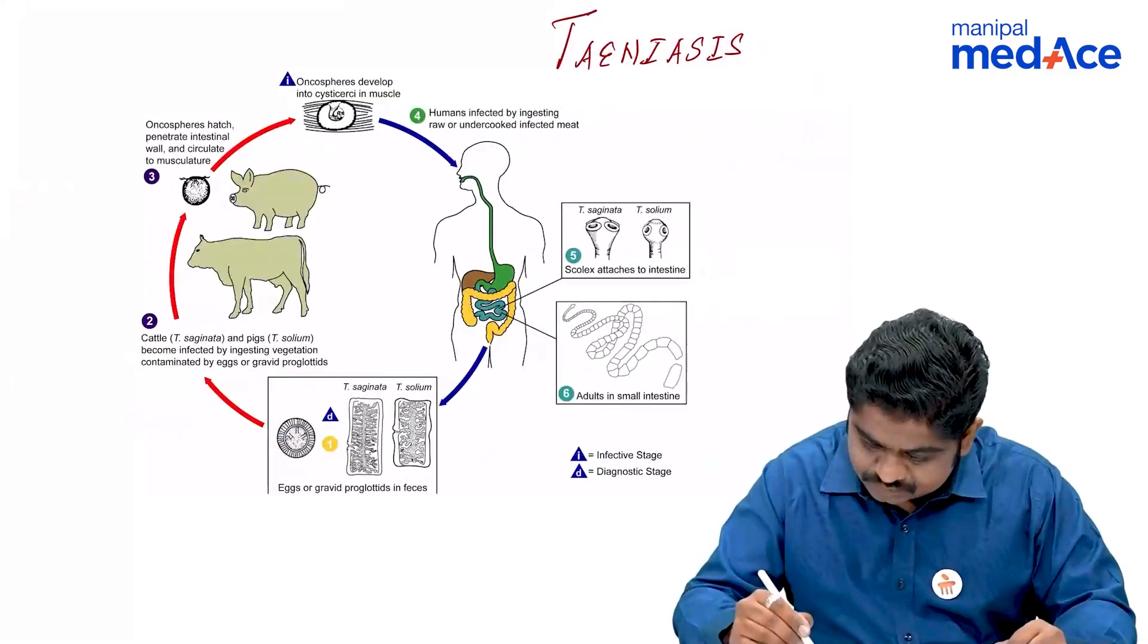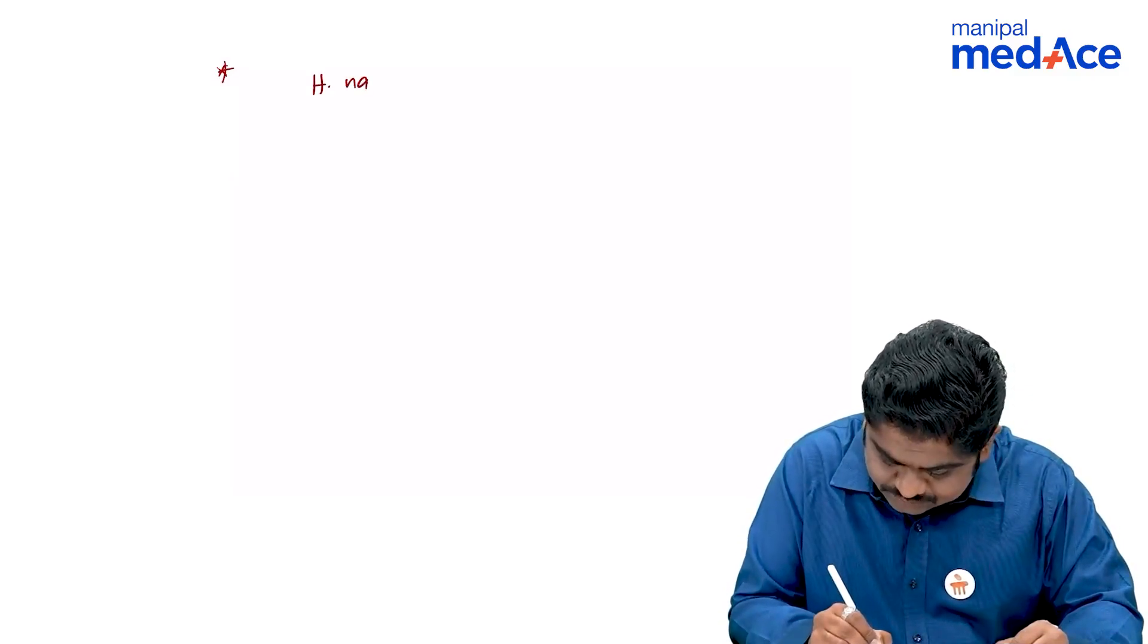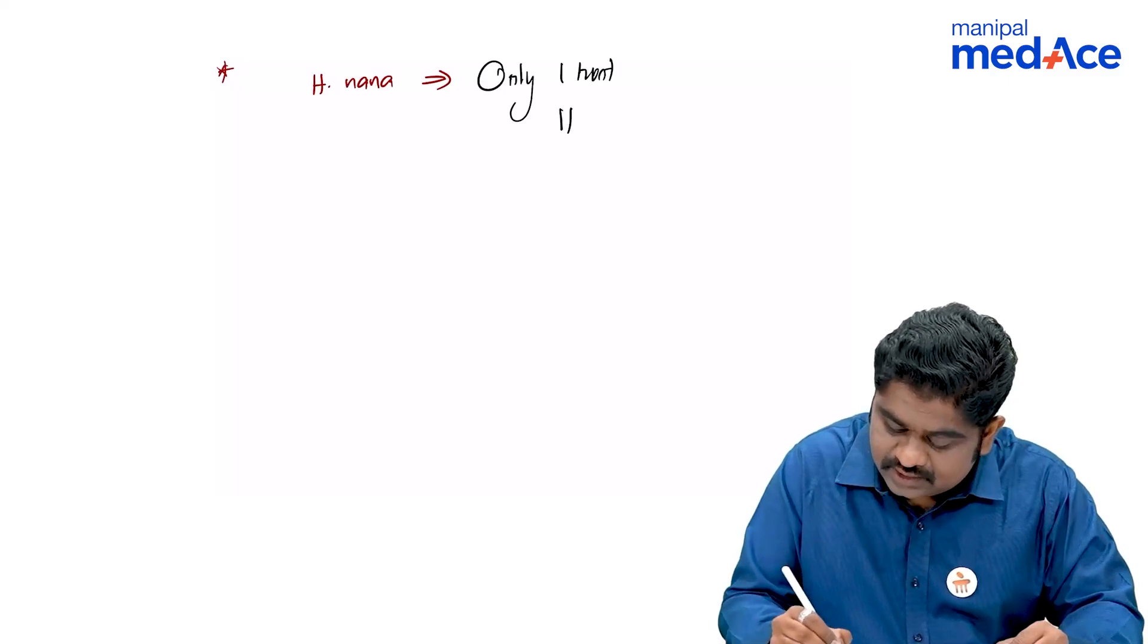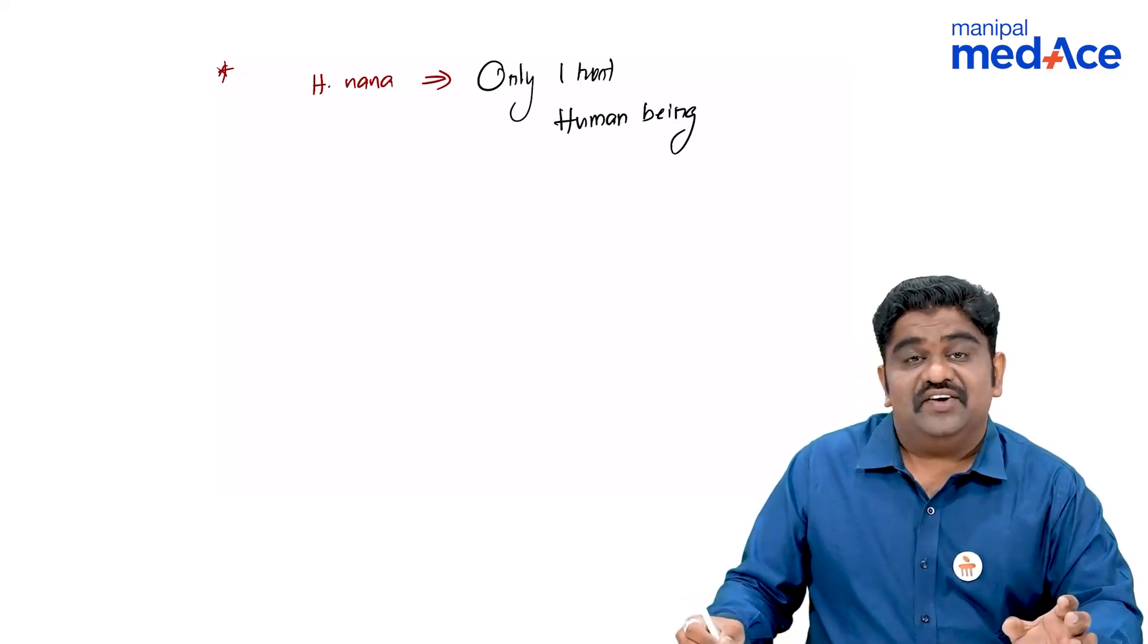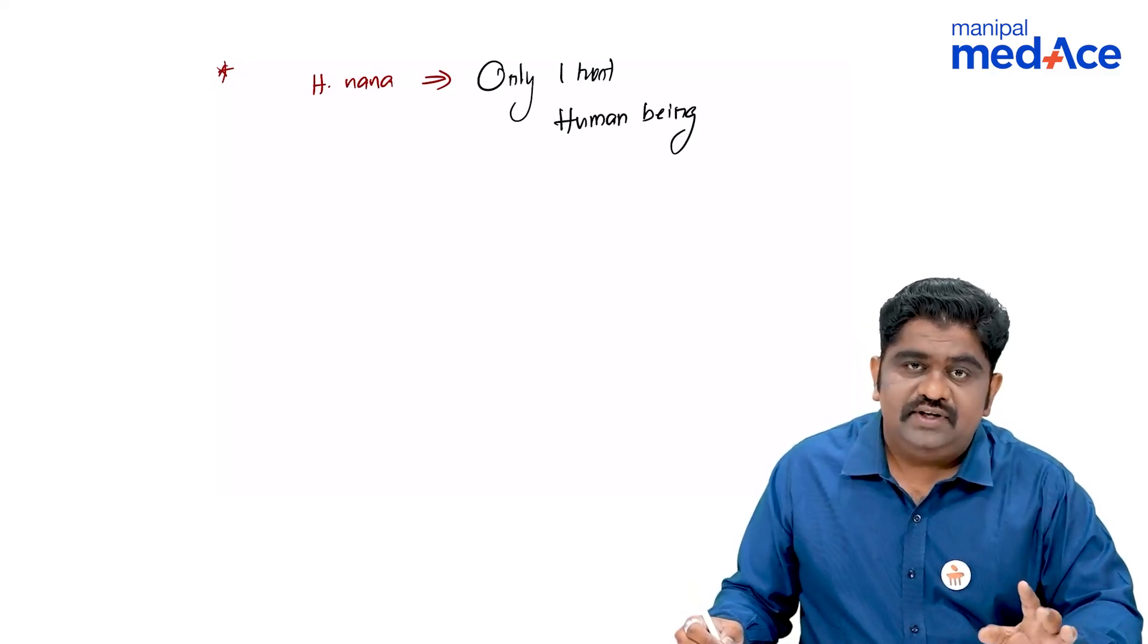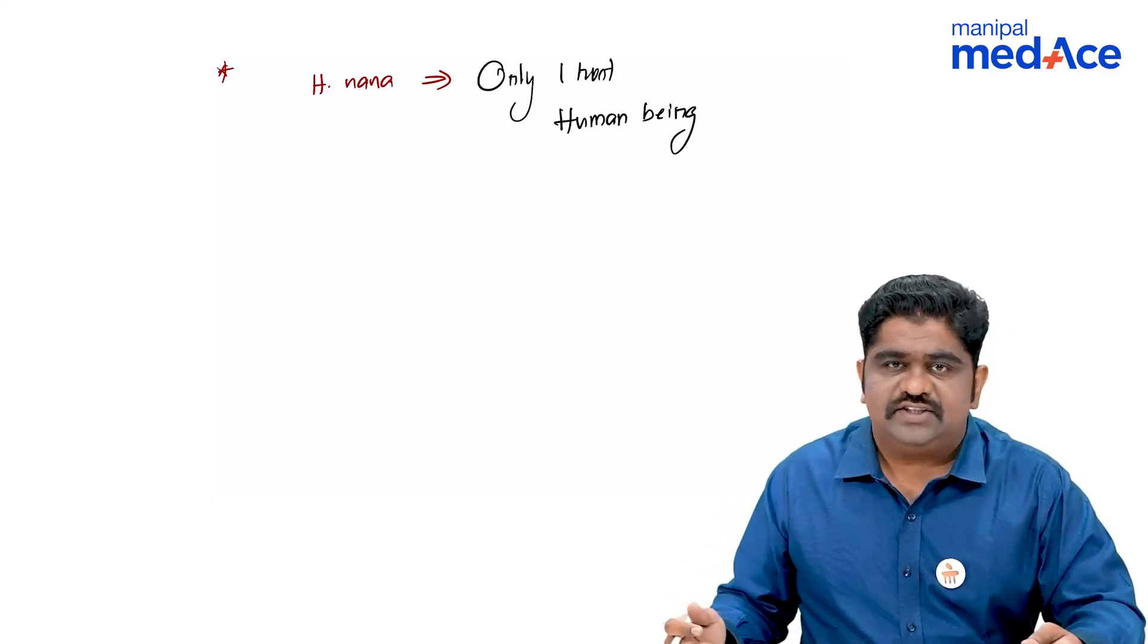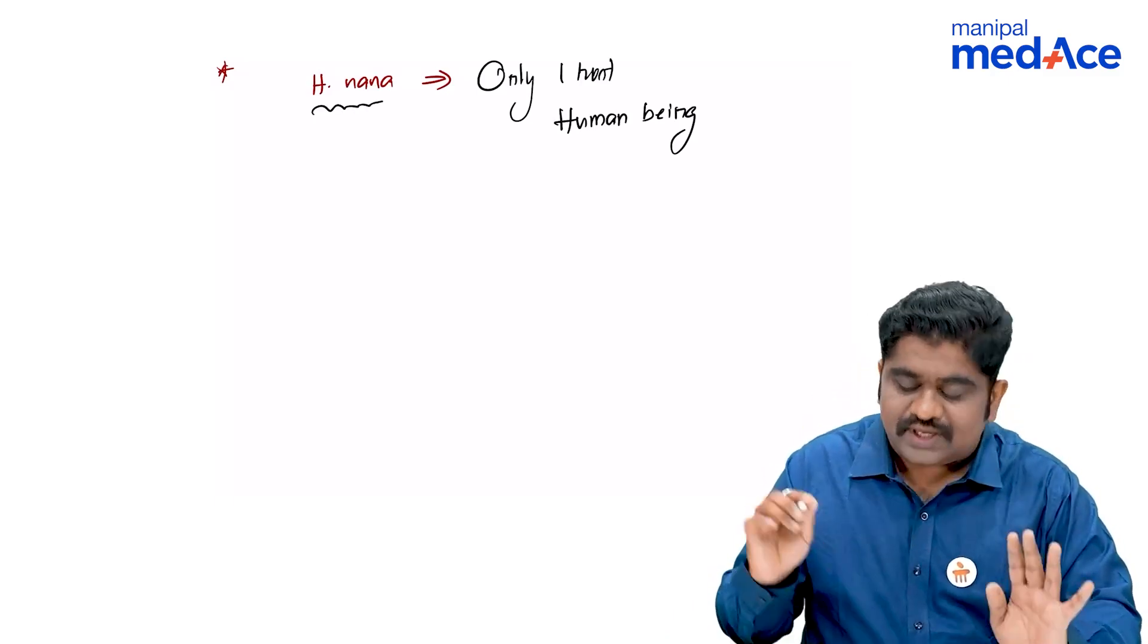Now, let us look at the uniqueness of Hymenolepis nana. This is an organism which requires only one host and that host is a human being. A small pro tip. Listen very carefully. Whenever you read about the life cycles of parasitology or protozoology or metazoology in general, always remember one of the hosts has to be human being. Without human being, there is no point in learning it under medical or human parasitology. So, remember, human being will be a definitive host. H. nana has only one host and that is human being.